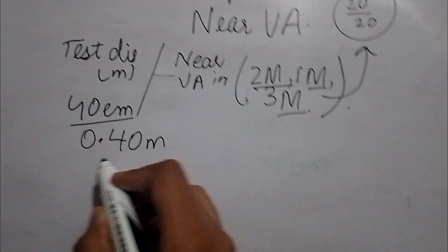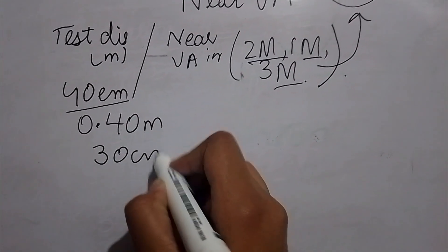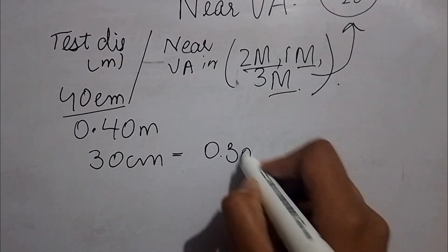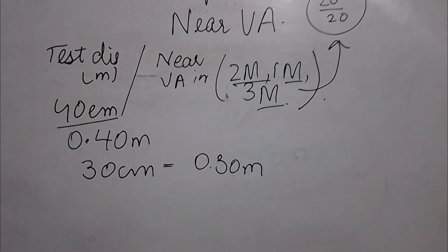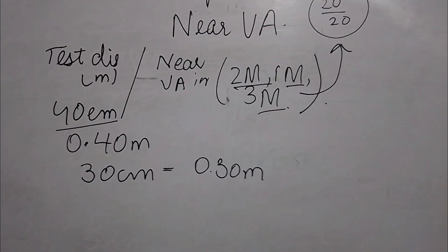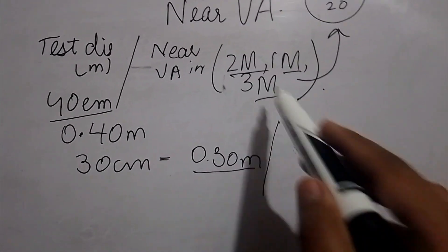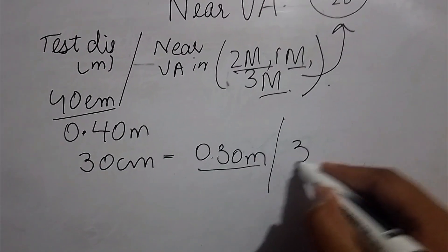Similarly, if you have the testing distance as 30 cm, if you convert it into meters, it will be 0.3 meters. The distance is here in the numerator and in the denominator we have the notation.